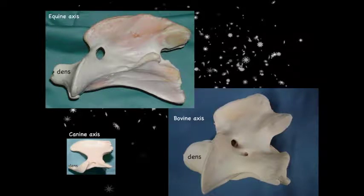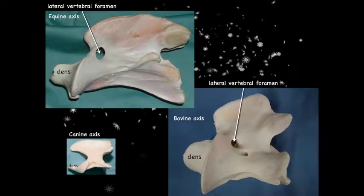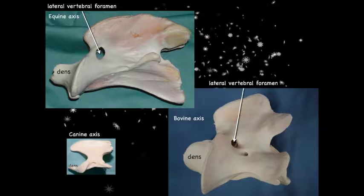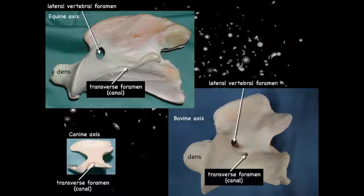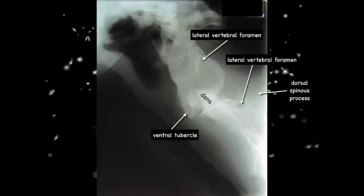Moving to the axis, you can see the very prominent dens. There is also a lateral vertebral foramina on the axis, which we did not see in the dog, and so the second cervical spinal nerve passes through this. The transverse foramina or transverse canal passes through the transverse process — this is where the vertebral artery passes, all the way back to C6. A radiograph shows the lateral vertebral foramina of the atlas, the ventral tubercle, the dens, the lateral vertebral foramina of the axis, the dorsal spinous process, and the transverse process.